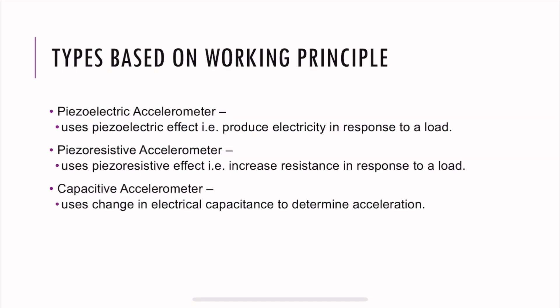There are types of accelerometers based on the working principle. We have three types: piezoelectric, piezoresistive, and capacitive. Piezoelectric accelerometers use the piezoelectric effect, that is, produce electricity in response to a load. Piezoresistive uses a piezoresistive effect, which is to increase resistance in response to a load. And capacitive accelerometer uses change in electrical capacitance to determine the acceleration.